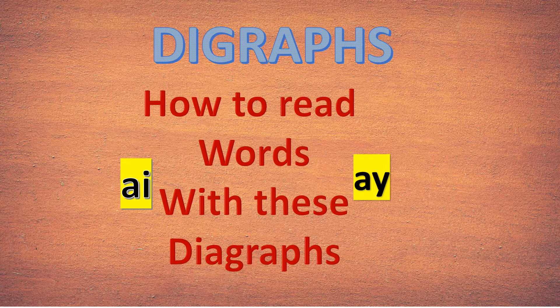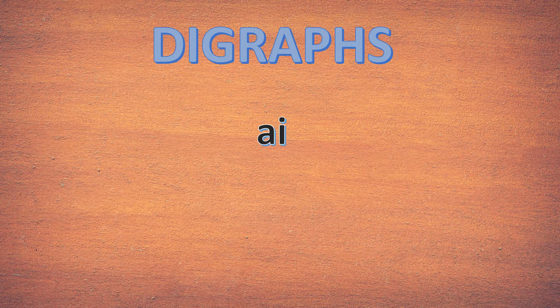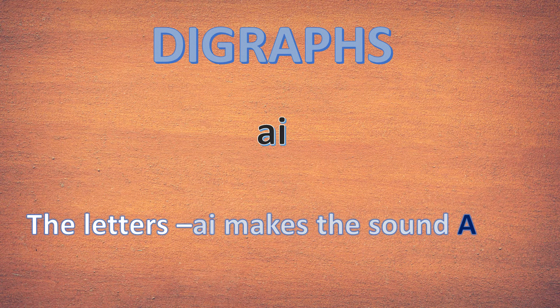What sound do they make? First we will learn the digraph A-I. Children, please remember the letters A-I make the sound A. A-I makes the sound A. So whenever you see these two letters A and I together, please read it as A.